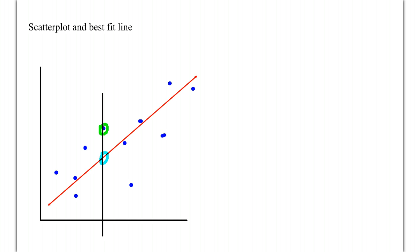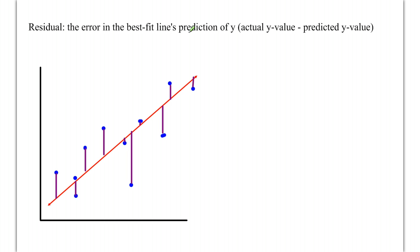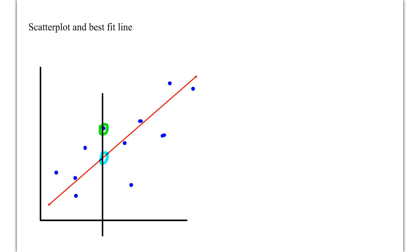So, looking at that definition again, it says the error in the best fit line's prediction of y, the actual minus the predicted. So, we take our actual value here minus the predicted, and we're going to get this distance here. Some positive number, this distance here, that's going to be the error, which we call the residual.